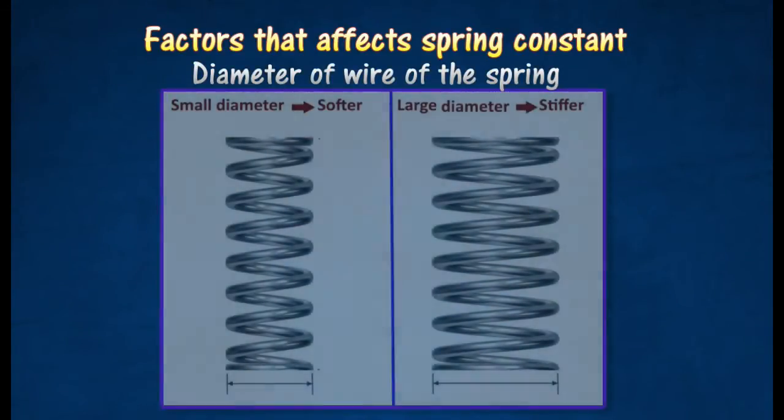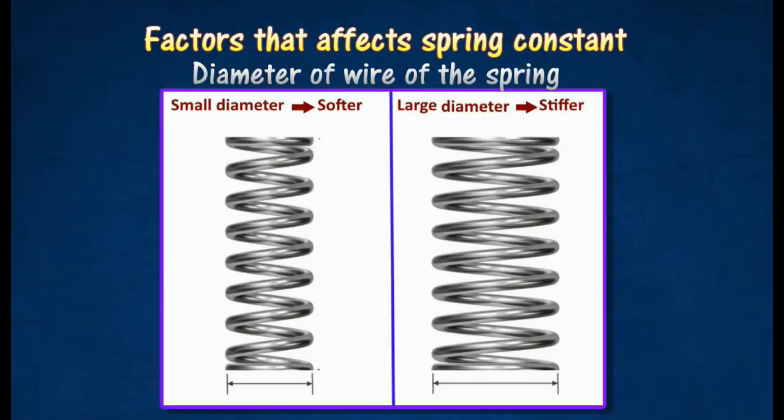Springs with a smaller diameter of wire have a smaller spring constant. Springs with smaller diameter of wire are thus softer and easier to extend.